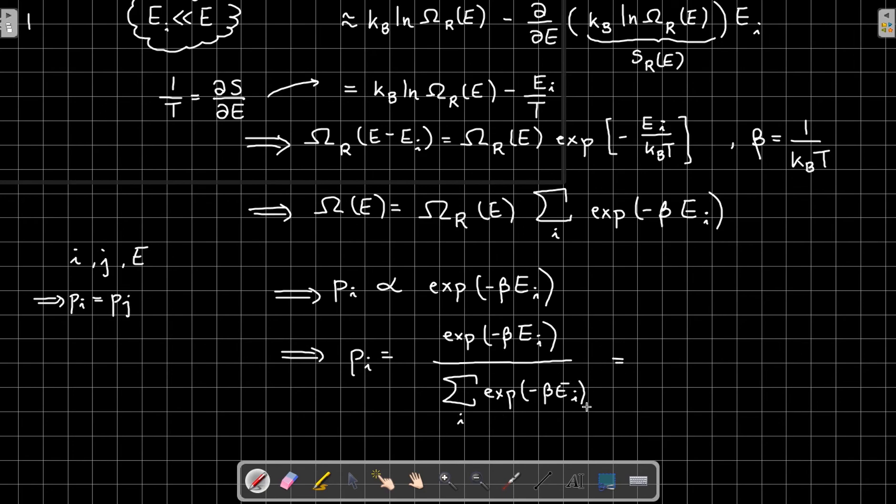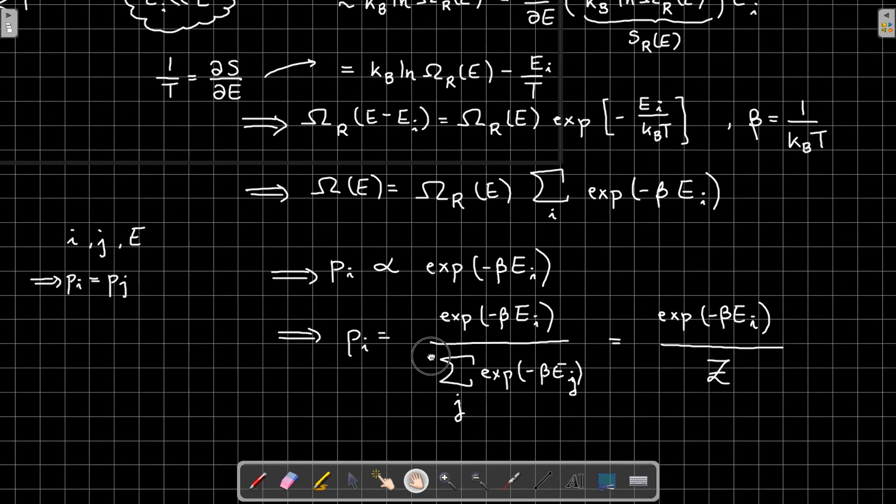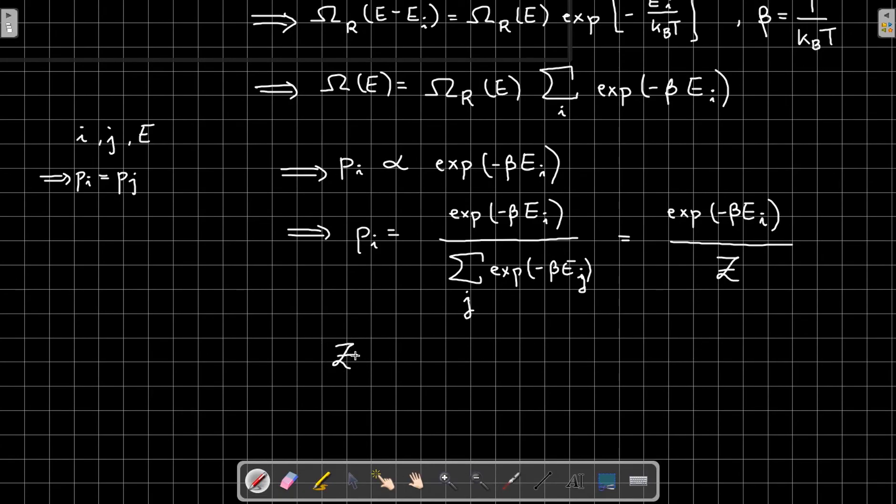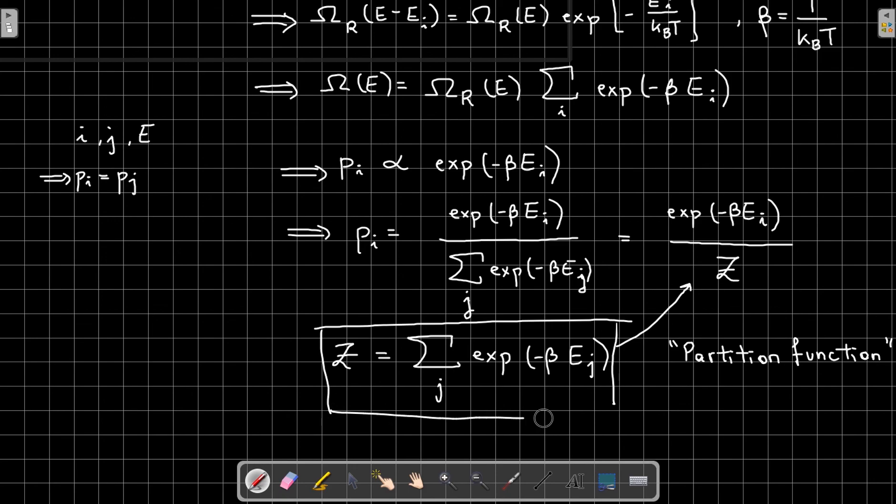Now usually we define the denominator here as something called the partition function. So we often write this as exponential over Z. This Z is called the partition function and it is defined as the denominator. So Z equals sum over j of exponential of minus beta E_j. This is a very important quantity as we'll see later on if we find the partition function we fully solve the problem we're dealing with. All other thermodynamic quantities can be expressed in some way or another as a function of this. So if anything, this is the result that you want to be boxing and perhaps this as well.